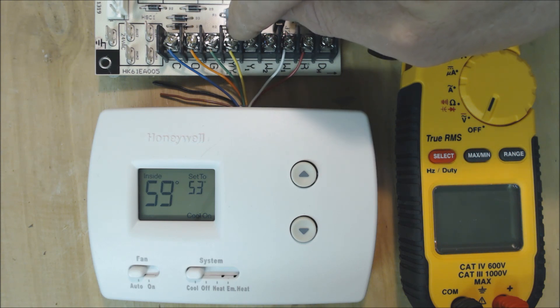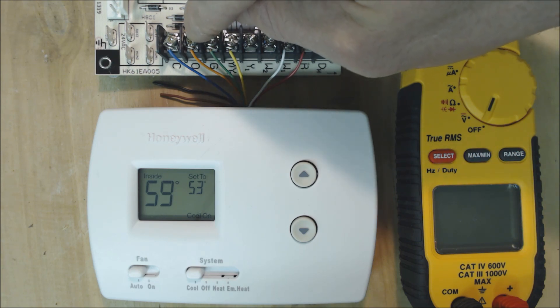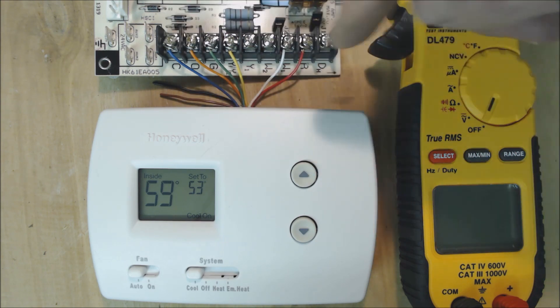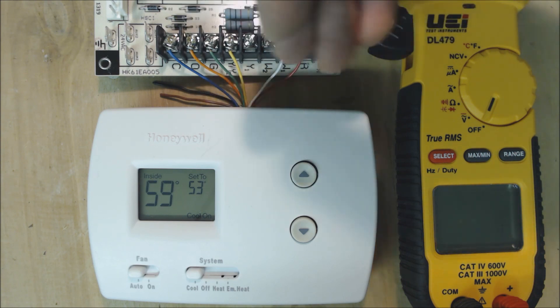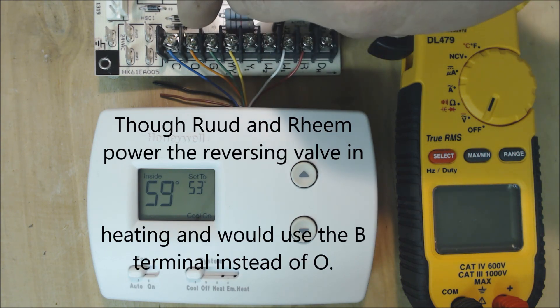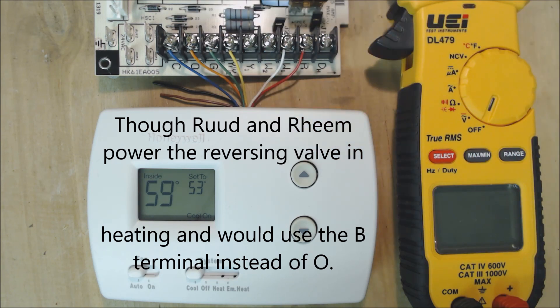G is fan, O is reversing valve, and C is common. This wiring with the O reversing valve would be for most major manufacturers because we're powering the reversing valve in cooling mode. Right now we're actually powering for cooling. You see that it says cool on.